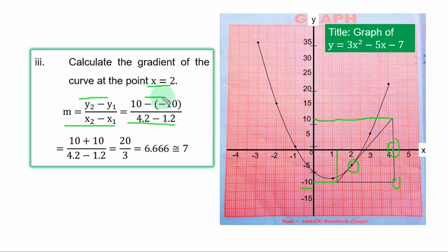Minus minus is plus. You have 10 plus 10 over 4.2 minus 1.2. That is 20 over 3. If you divide, you have this to the nearest whole number. You have 7 as the gradient. One beauty of this gradient is that if you draw your line beyond where I stopped here, you will have the same value, provided you read your values correctly.